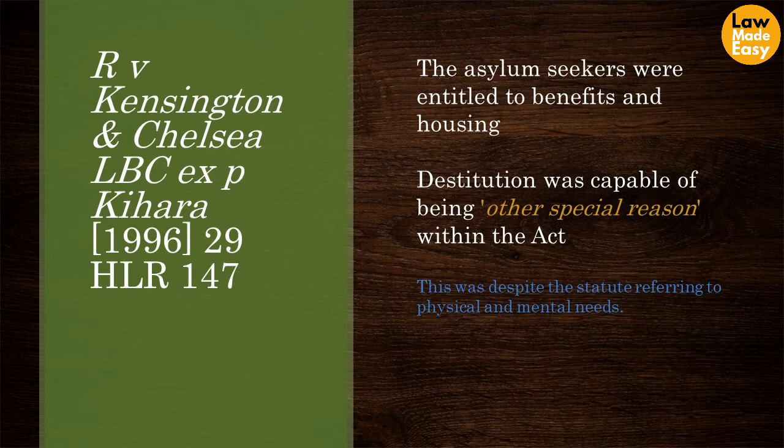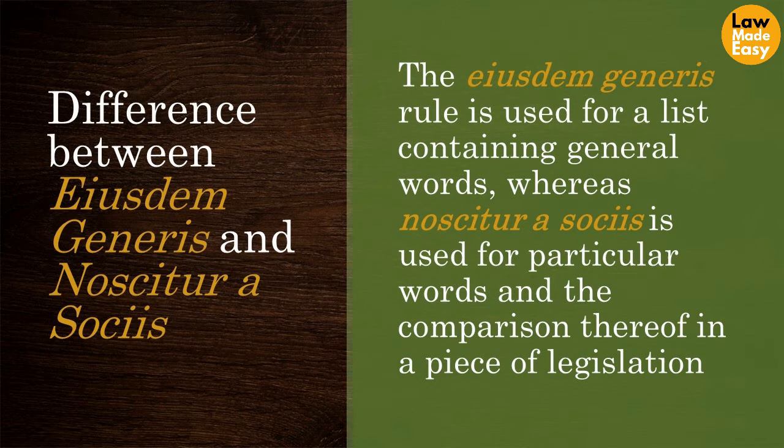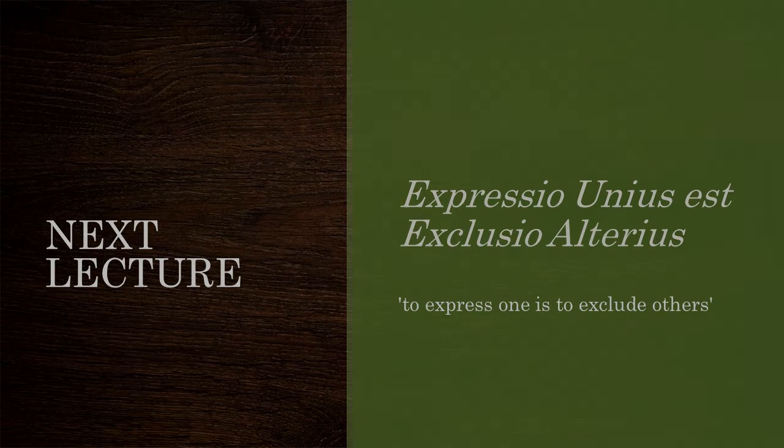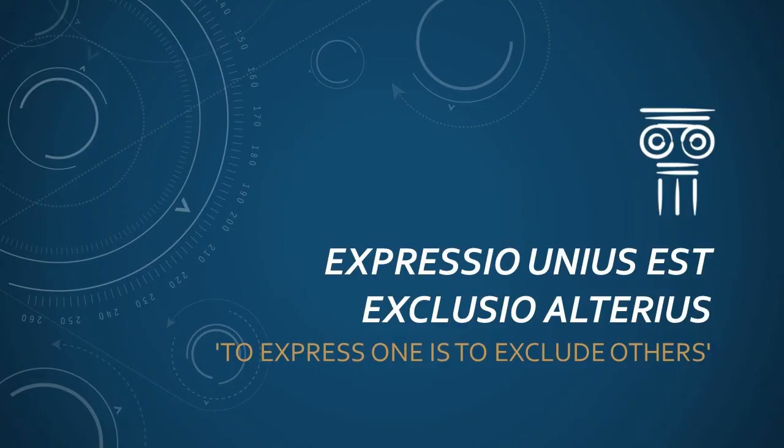The difference between ejusdem generis and noscitur associiis can be stated as follows: the ejusdem generis rule is used for a list containing general words, whereas noscitur associiis is used for particular words and the comparison of those in a piece of legislation. We will now look at the third rule of language: expressio unius est exclusio alterius. See you in the next lecture.